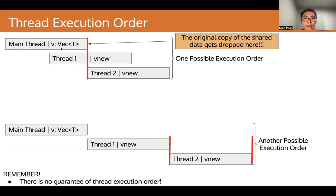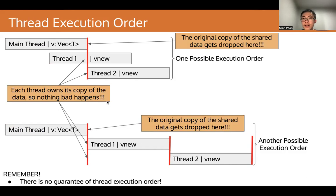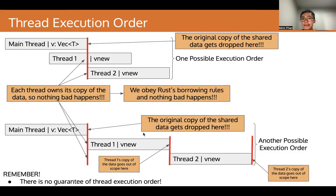Looking at the example again, this time both thread one and thread two have V_new variables that are owned values copied from V. So when the variable V in the main thread gets dropped, both V_new values in thread one and thread two are still valid because they are owned values, not references. The same is true for the second execution order — when V gets dropped, both copies are still valid. Nothing bad happens because everything follows Rust's borrow checker rules, and we obeyed Rust's borrowing rules by giving each thread its own copy of the data instead of references.